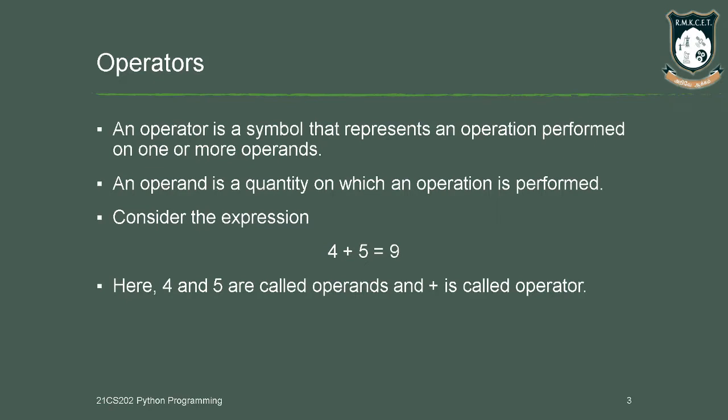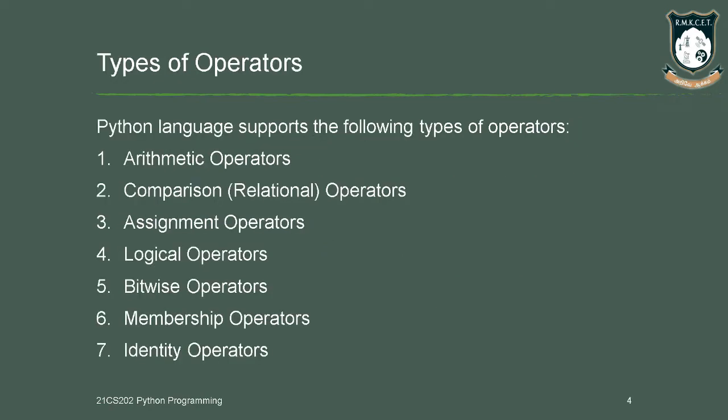So now we have a clear idea about operators. The plus symbol is the operator which acts on the digits 4 and 5 to get the result 9. In Python programming language we have 7 different types of operators. The first one is arithmetic operator.